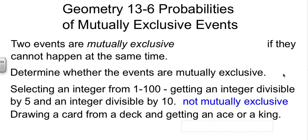Drawing a card out of a deck and getting an ace or a king. Well, unless they've screwed up at the printer, you can't get both an ace and a king on the same card. So that situation is indeed mutually exclusive, because you can't get both of them.